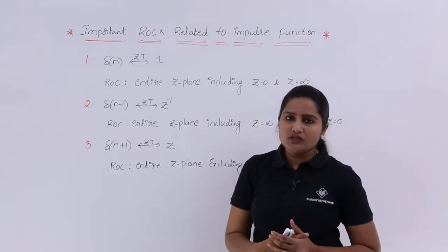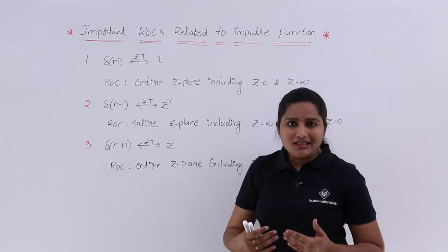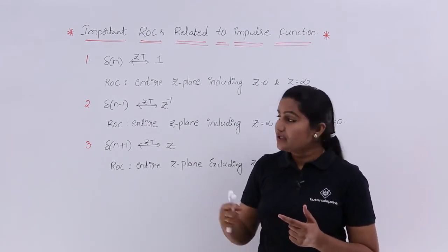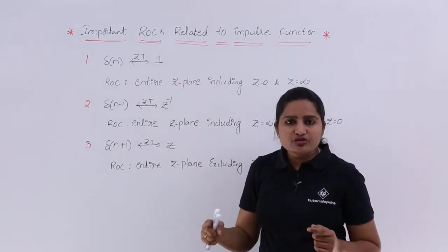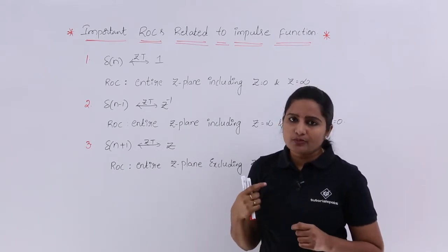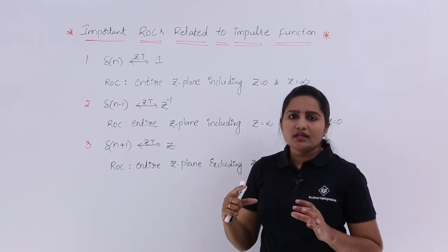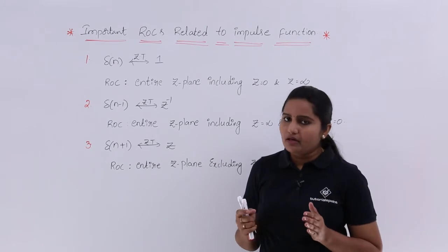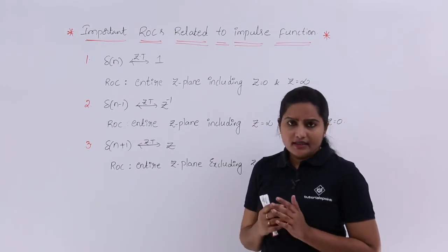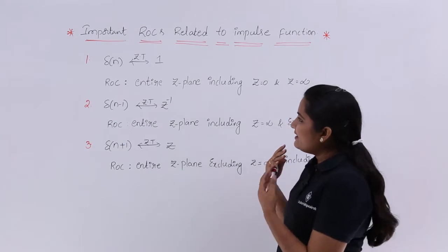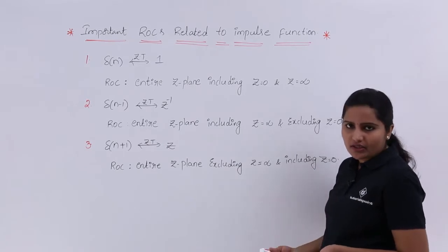Why? Because when you are describing the ROC you need to see the denominator — that means you need to find the poles. If this is δ[n] then the transform is 1. In this transform we need to equate the denominator to 0 to get poles, and according to those poles we draw the unit circle and describe the ROC. Here we are not having any denominator, that is why the ROC is the entire Z-plane including Z=0 and Z=∞.